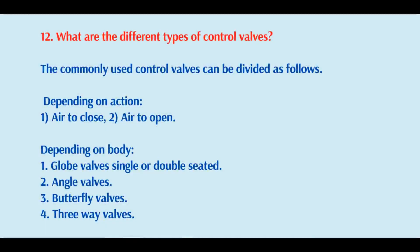What are the different types of control valves? The commonly used control valves can be divided as follows: depending on action — air to close, air to open; depending on body — globe valve (single or double seated), angle valves, butterfly valves, and three-way valves.